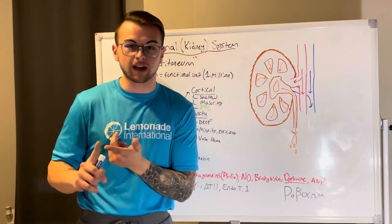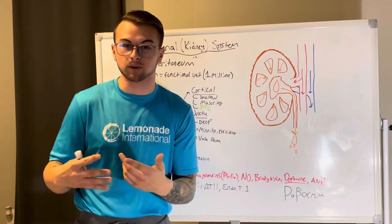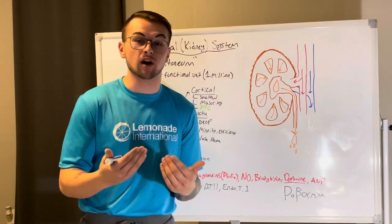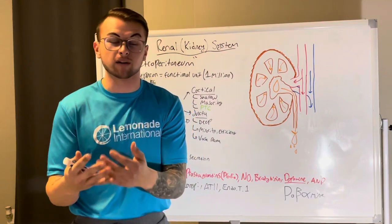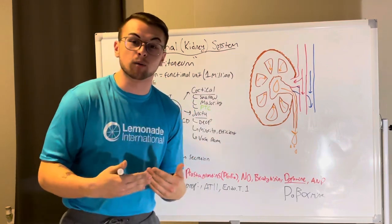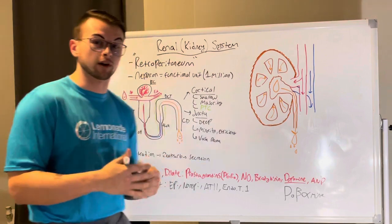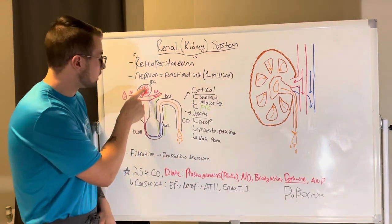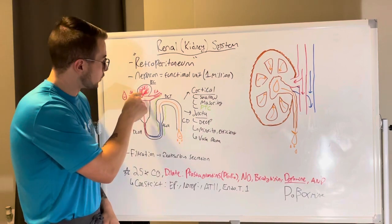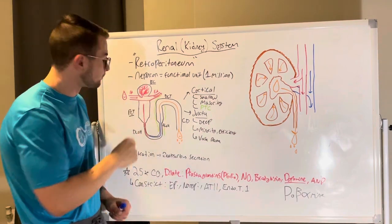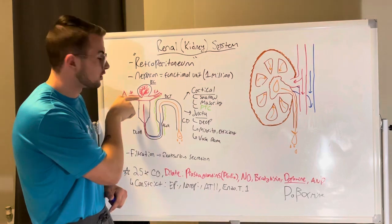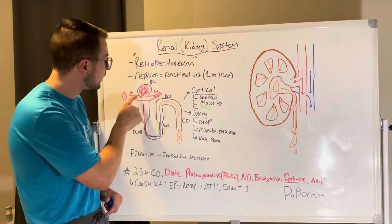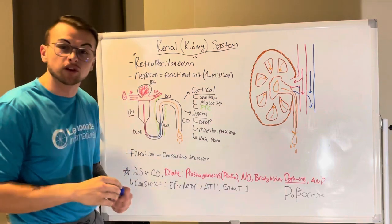What's unique about kidneys is that the nephrons have two sets of capillaries: a glomerular capillary, which is not a true capillary, and a peritubular capillary. Right now we're going to focus on the glomerular capillary. Through the afferent arteriole, blood is delivered to the glomerulus and filtered there.